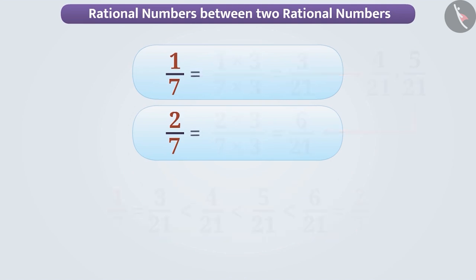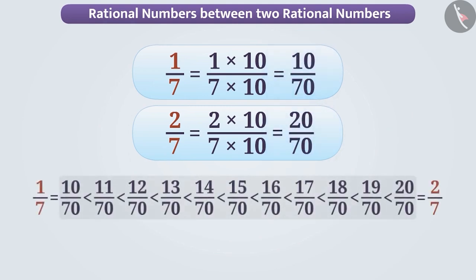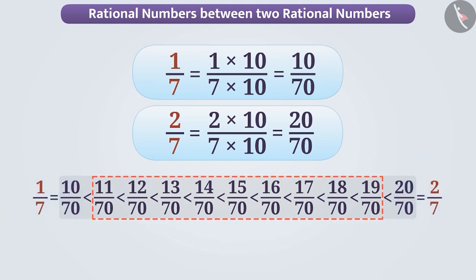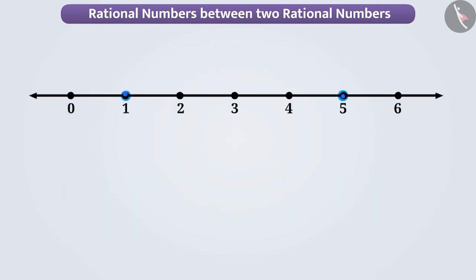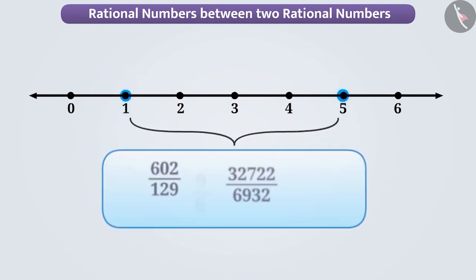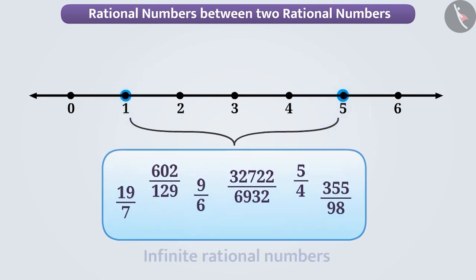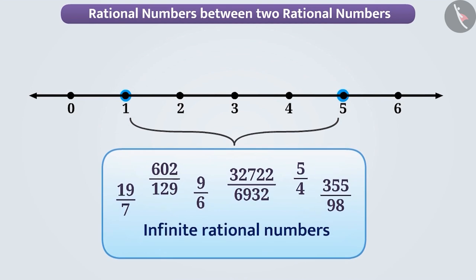Similarly, if we multiply the numerator and denominator of both numbers by ten, we get their equivalent rational numbers ten by seventy and twenty by seventy, and we will get rational numbers between them in the same way. In this manner, many numbers between the rational numbers one by seven and two by seven can be found. From this example, we get to know that even if the number of integers between two integers is finite, infinite rational numbers between two rational numbers can always be found.